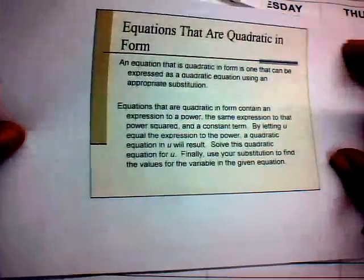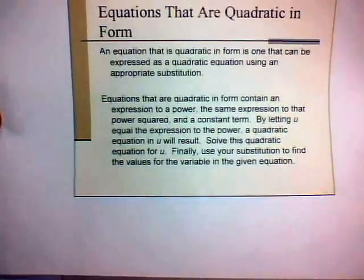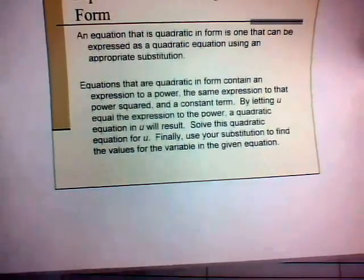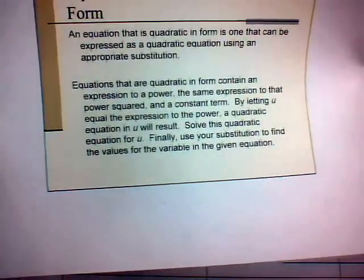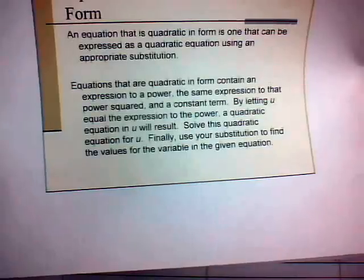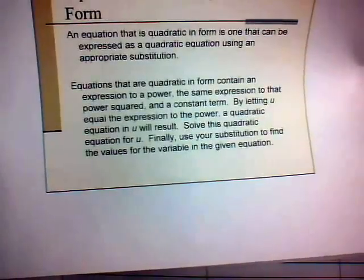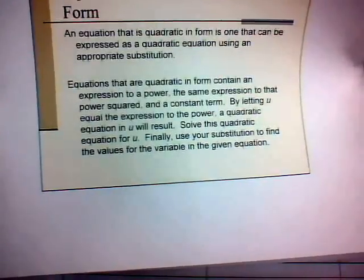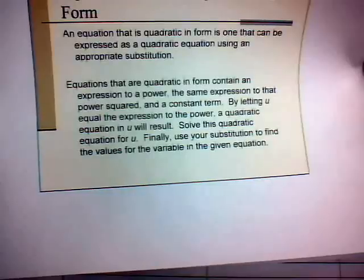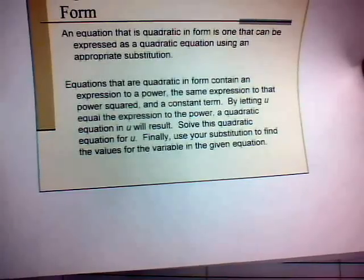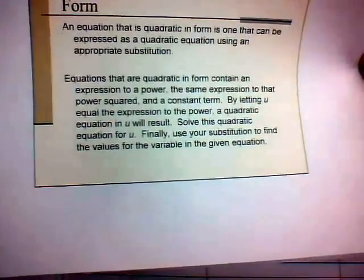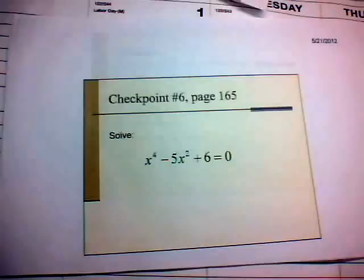An equation is quadratic in form when it contains an expression to a power, that same expression squared, and a constant term. We let u equal the expression to the power, solve the resulting quadratic for u, then back-substitute to find the original variable's values.